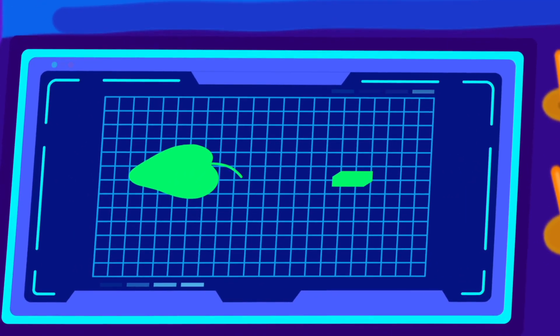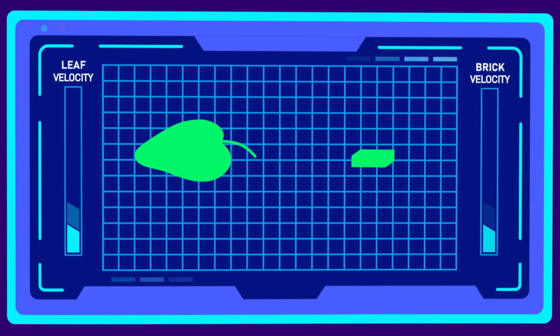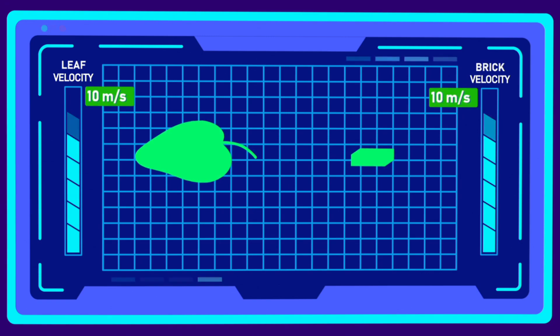So if we drop a pyramid brick and a leaf, these are the three things that we will notice. First, the velocity of both brick and leaf increases with a constant rate of 10 meters per second, due to gravity.